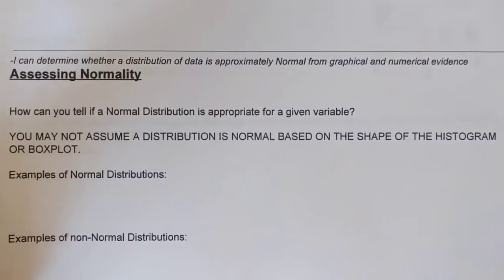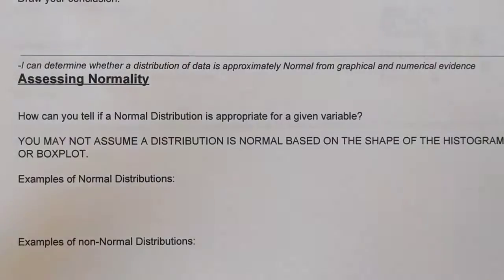In this video we're going to talk about the end of section 2.2 where we assess normality of a distribution. We do this using two different methods. First we calculate the empirical rule to see if the data fits the model of 68, 95, and 99.7 percent of the data between 1, 2, and 3 standard deviations.